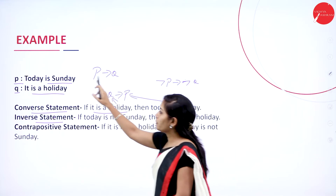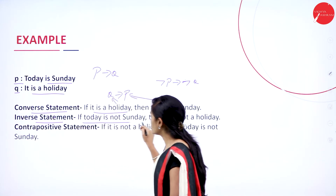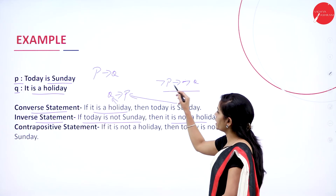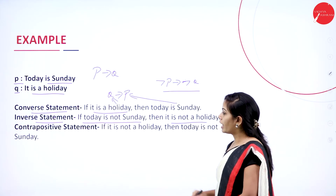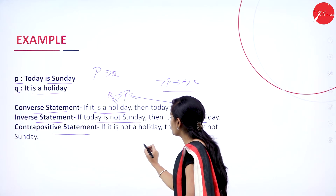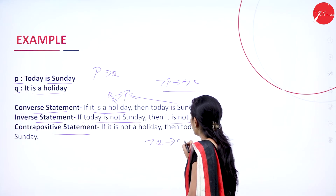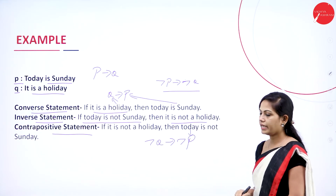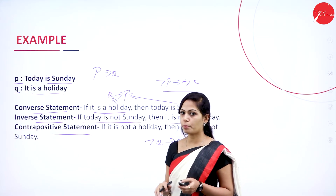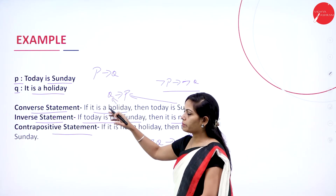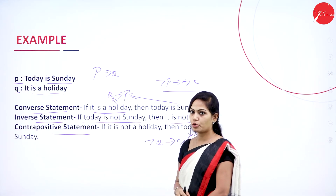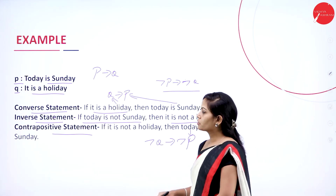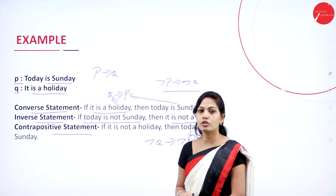The inverse statement ¬P → ¬Q: 'If today is not Sunday, then it is not a holiday.' The contrapositive is ¬Q → ¬P: 'If it is not a holiday, then today is not Sunday.' This is a two-marks question — given a statement, you write the converse, inverse, and contrapositive.